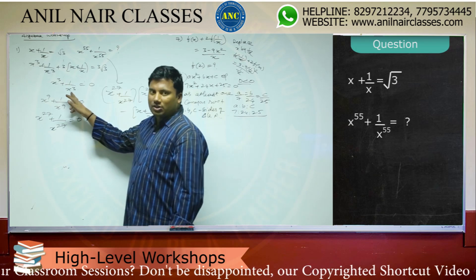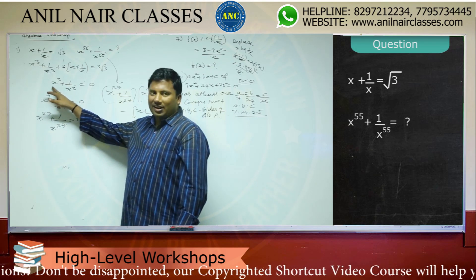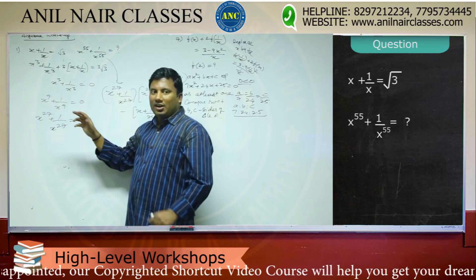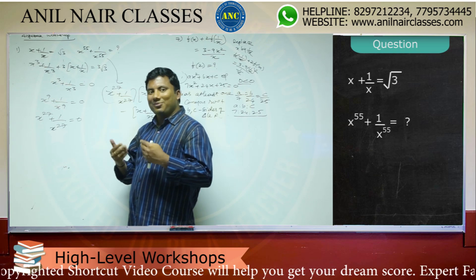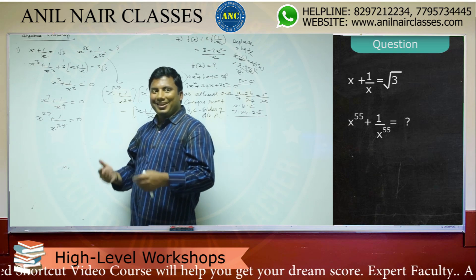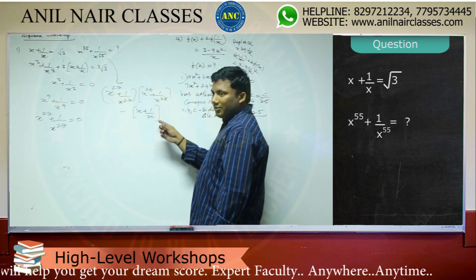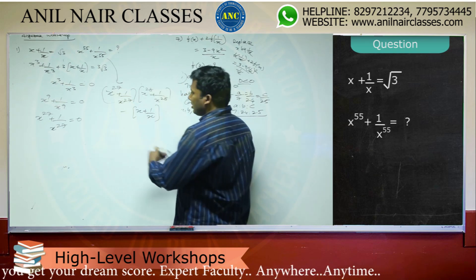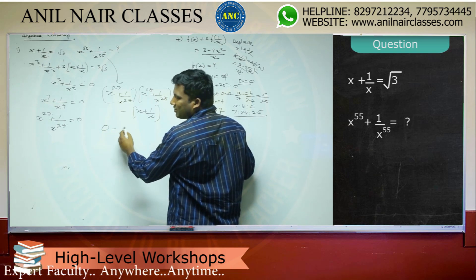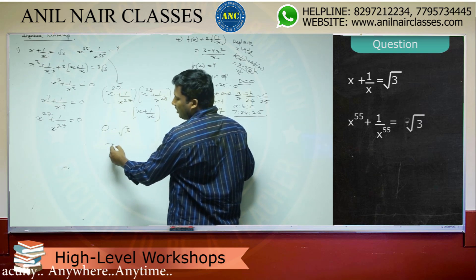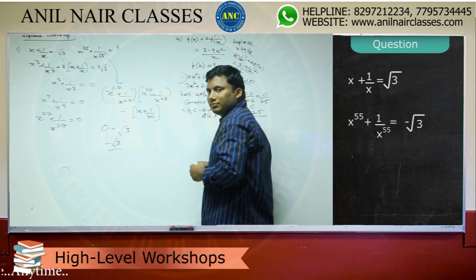No — this is X cubed plus 1 by X cubed. Cubing will become X power 9 plus 1 by X power 9, plus 3 into X cubed plus 1 by X cubed, equal to 0. This is 0, and 0 into anything is 0. So X plus 1 by X equals negative root 3.